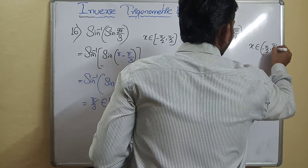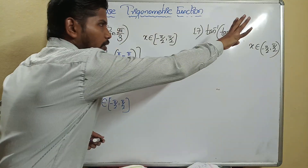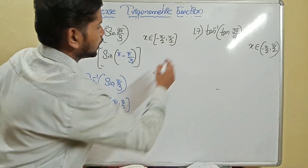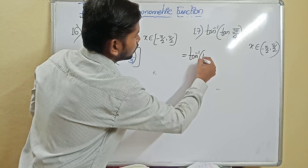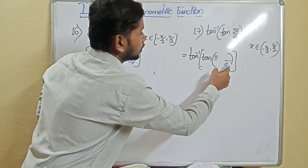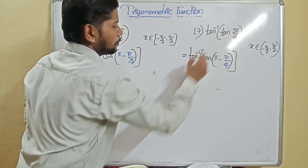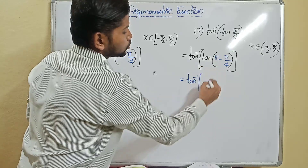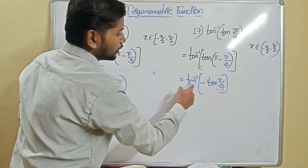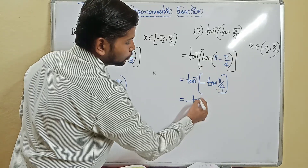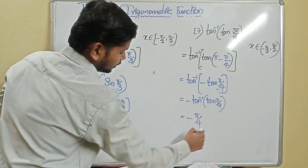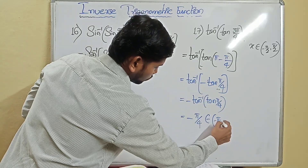Similarly for tan inverse of tan(3π/4): x must belong to (−π/2, +π/2). Since 3π/4 = 135° is outside that range, rewrite as π − π/4. In the second quadrant, tan is negative. So tan(π − π/4) = −tan(π/4), giving tan inverse of −tan(π/4) = −tan inverse of tan(π/4) = −π/4, which lies in (−π/2, +π/2). Correct.